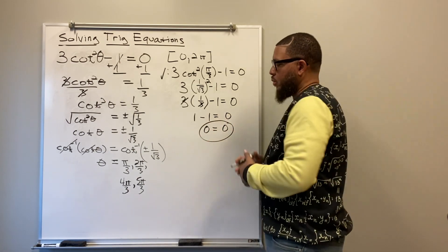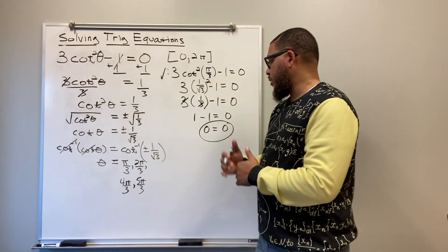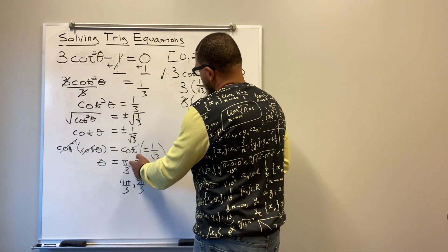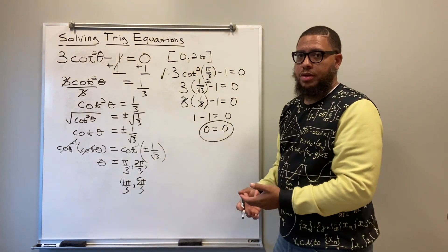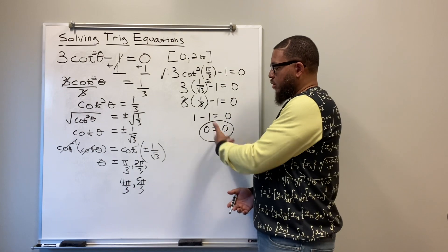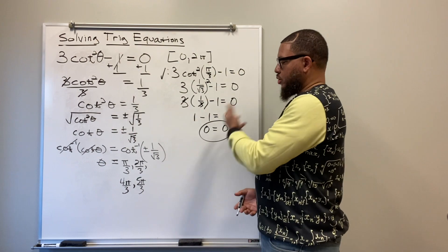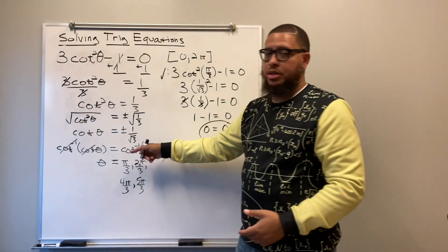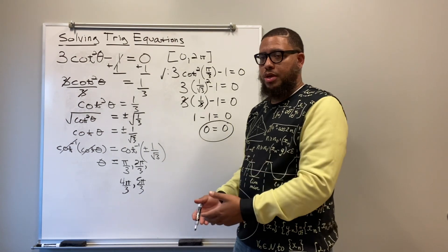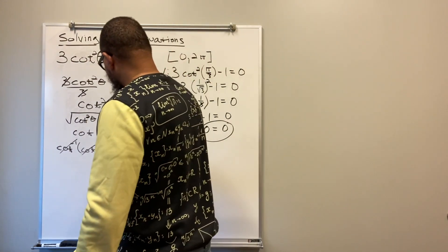Since one minus one equals zero, and zero equals zero, this is a true statement. In mathematics, if you're left with a true statement, it means the solution is correct. We're trying to find the truth, and we found it. So pi over 3 is valid. You should check 2 pi over 3, 4 pi over 3, and 5 pi over 3 on your own using the same process.